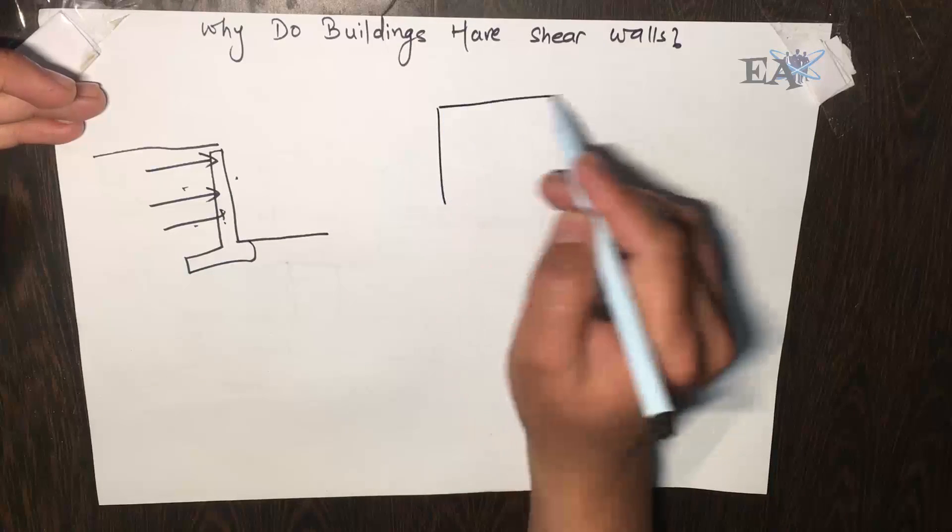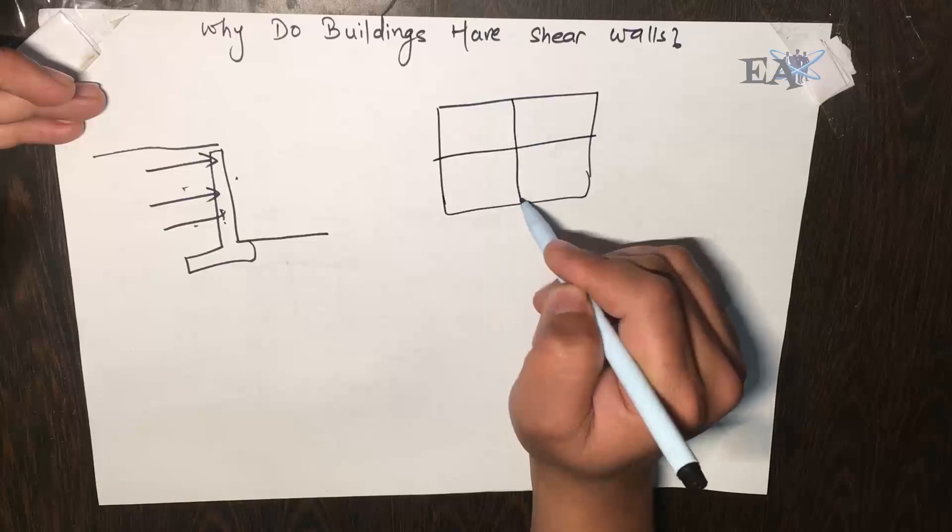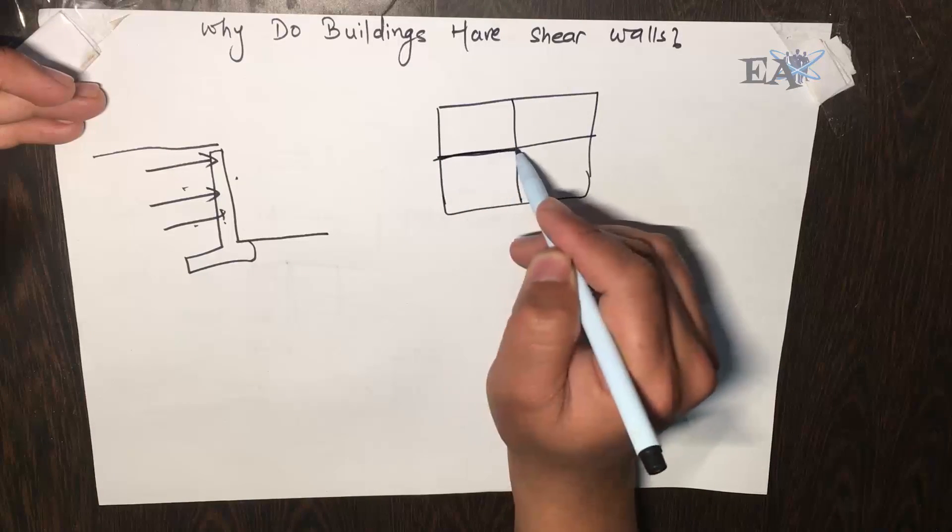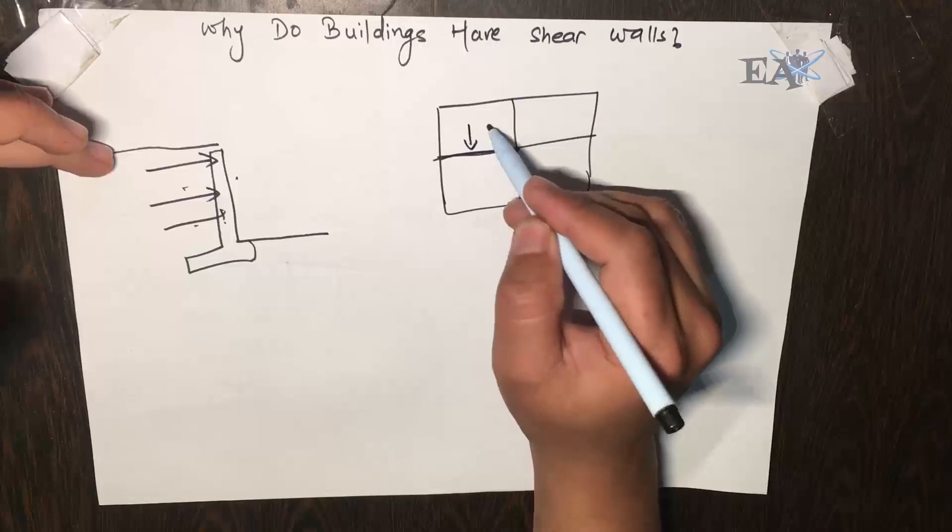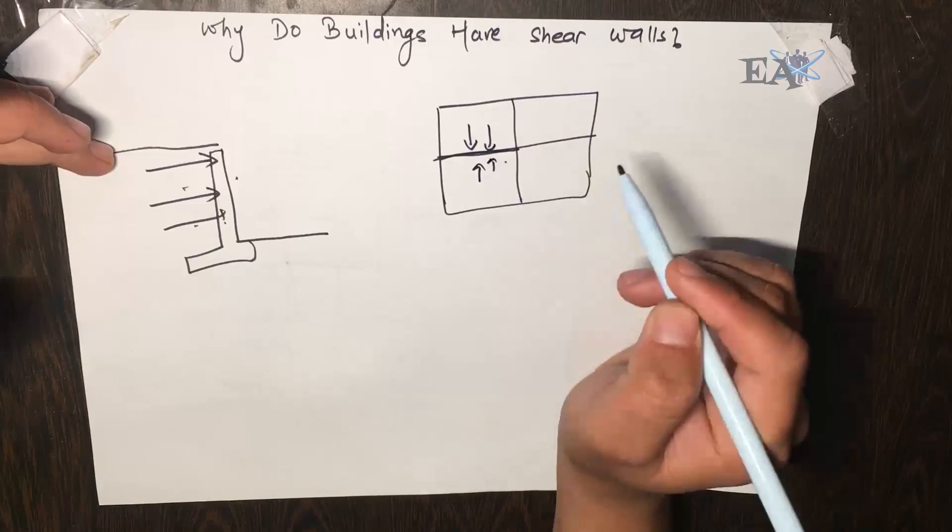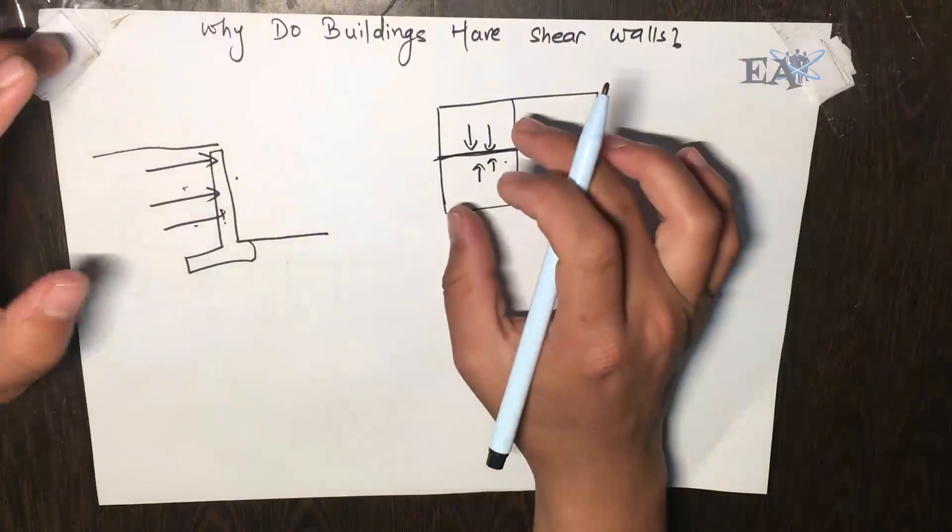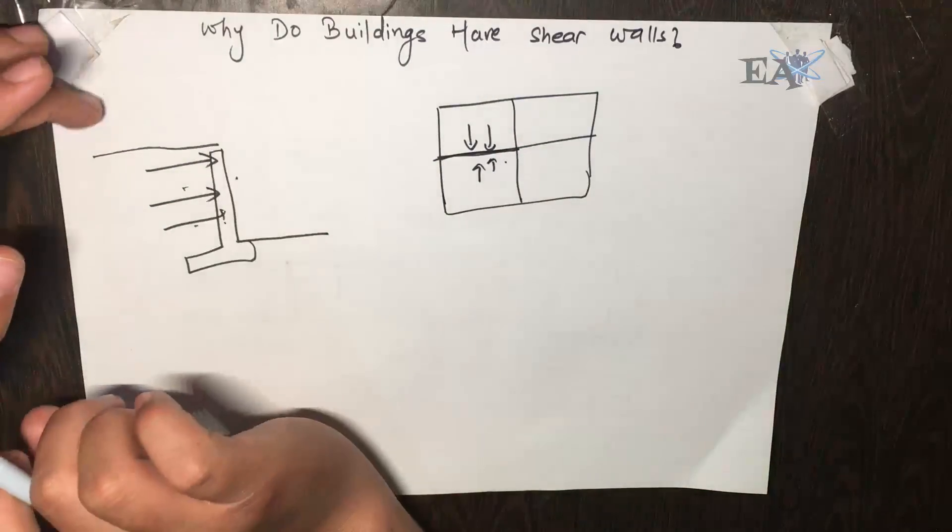But inside of the building, suppose if this is your building plan and you have a wall here, what is the purpose of this shear wall? Why do we need a shear wall though we don't have any lateral force over here?